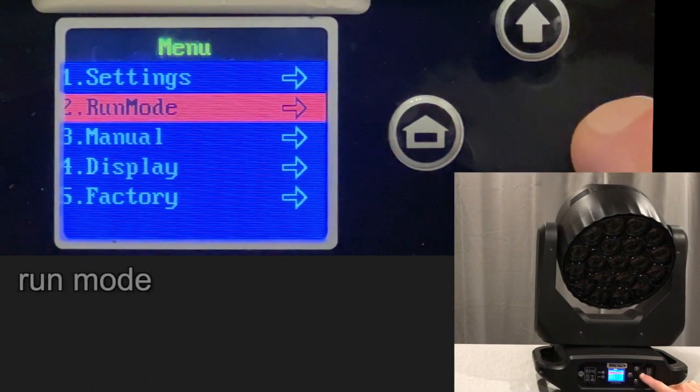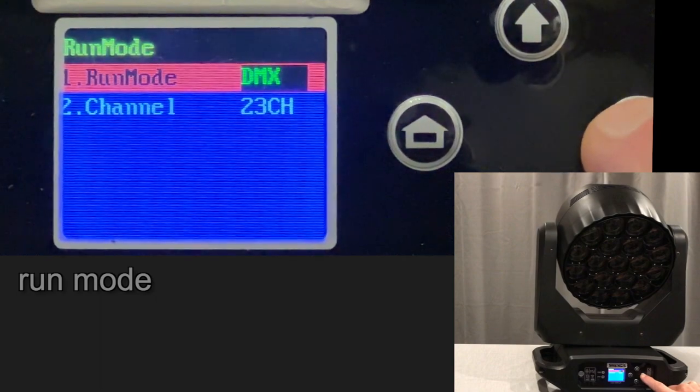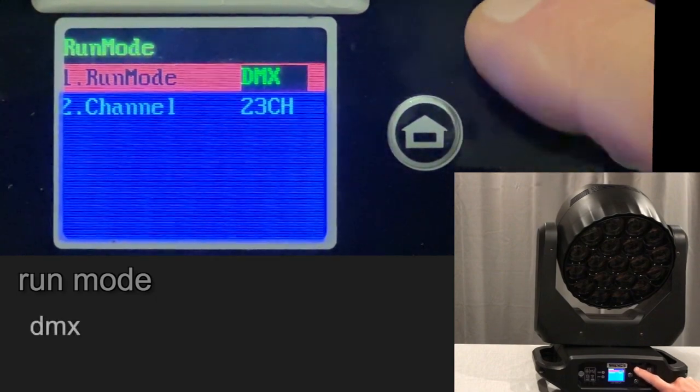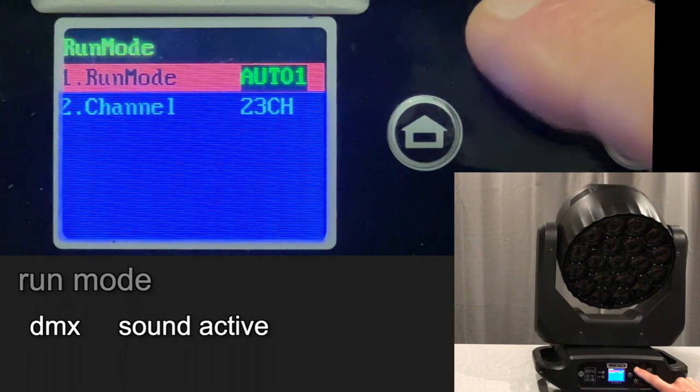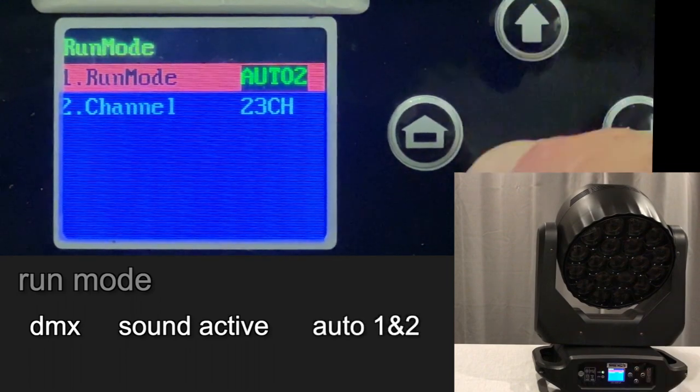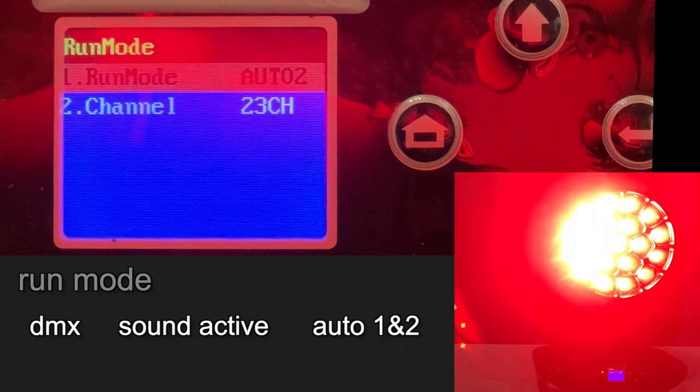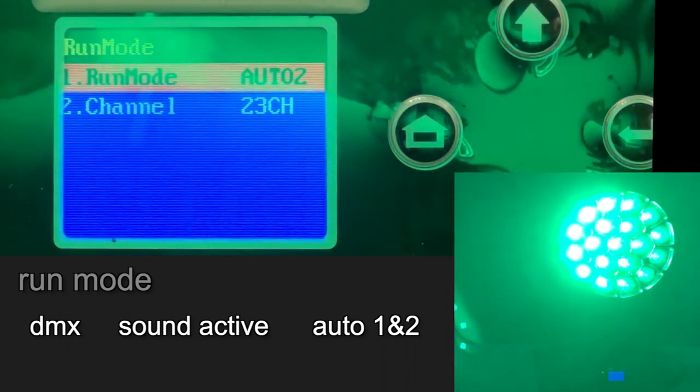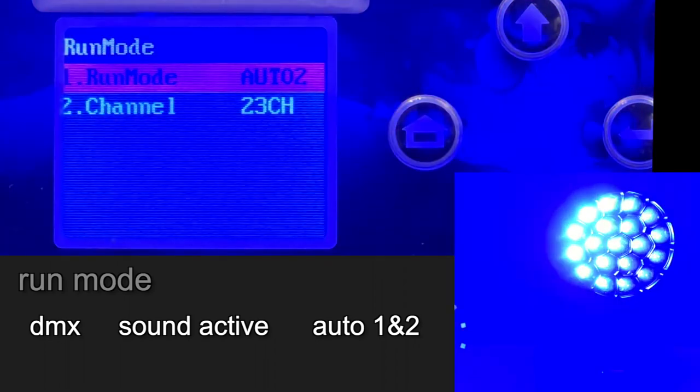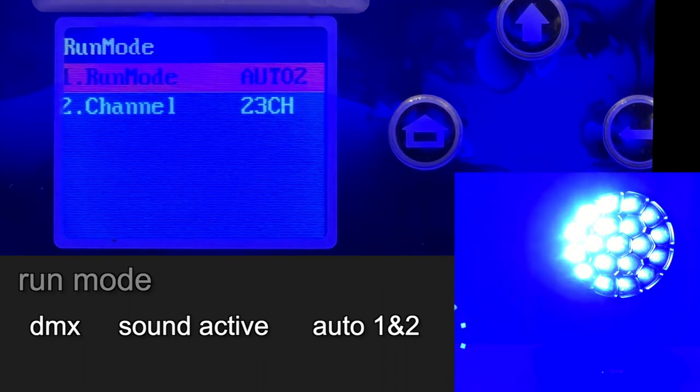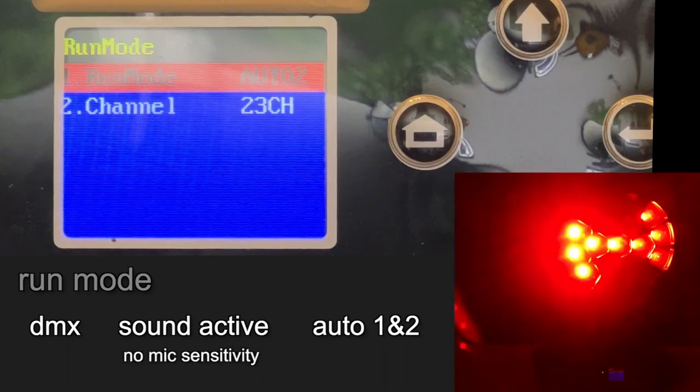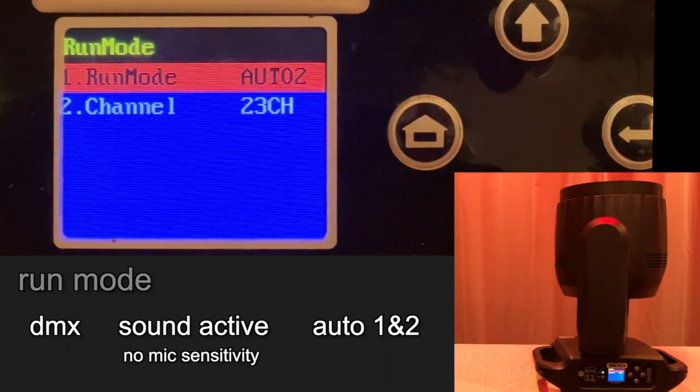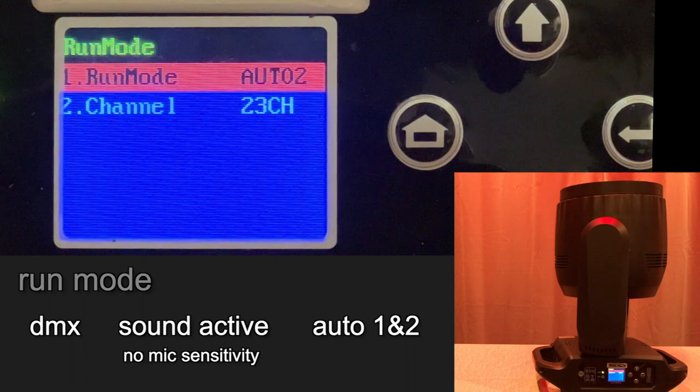In the run mode you can change it from DMX mode to a sound active mode and two different auto modes. It takes a while for it to kick in with the motion. On the sound active mode there's no mic sensitivity, so it's difficult to have a lot of control over that sound active mode.